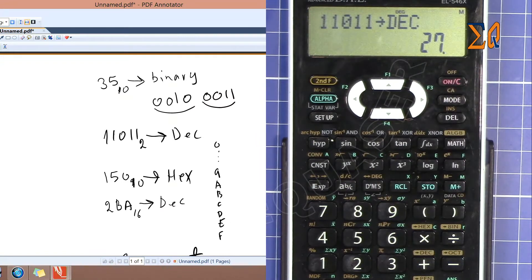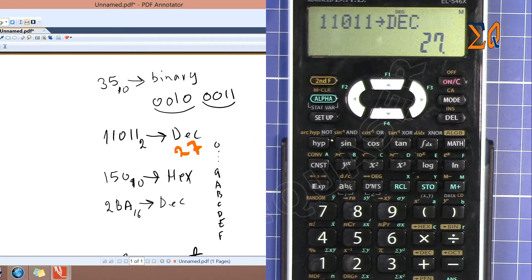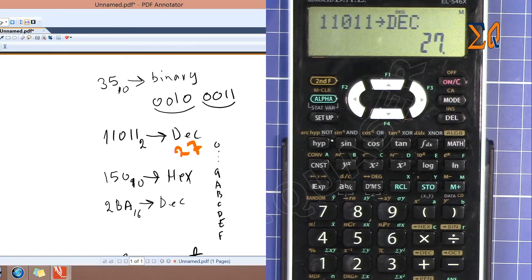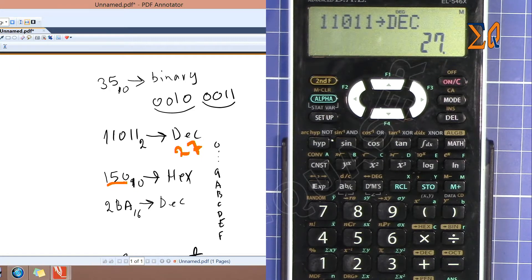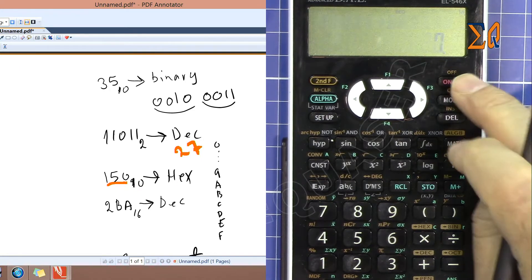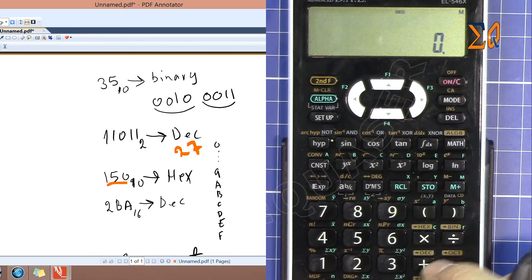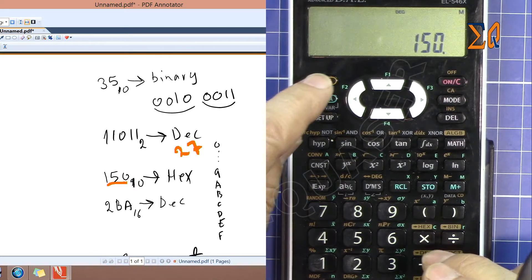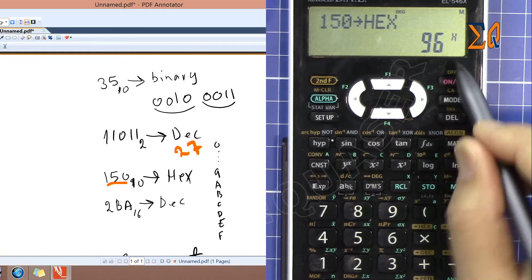Now let's convert this one. This is base 10, which is decimal, 152 to hex. Now I'm in decimal. Enter 152, second function, and hex. It shows 96H.